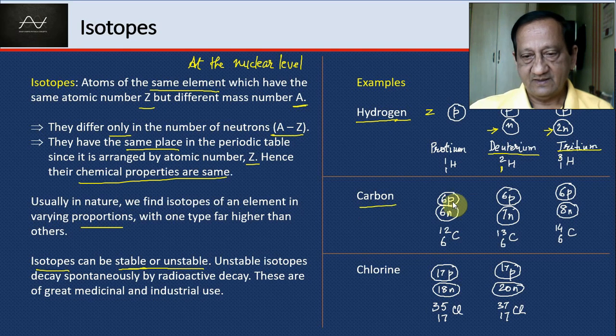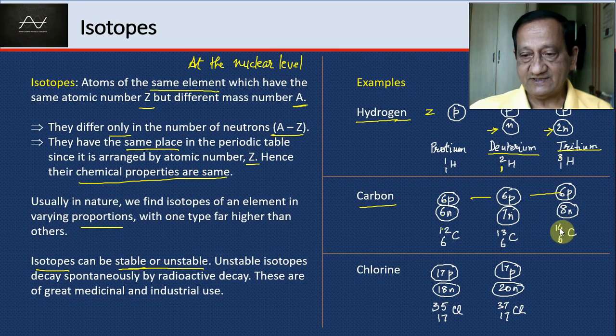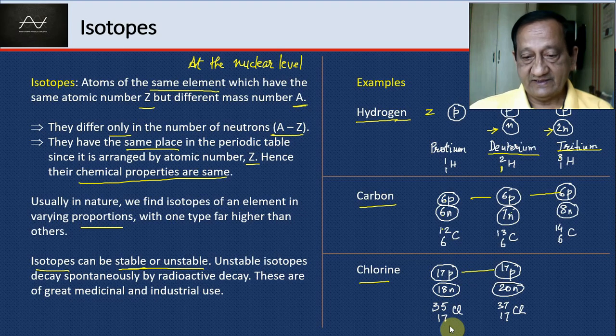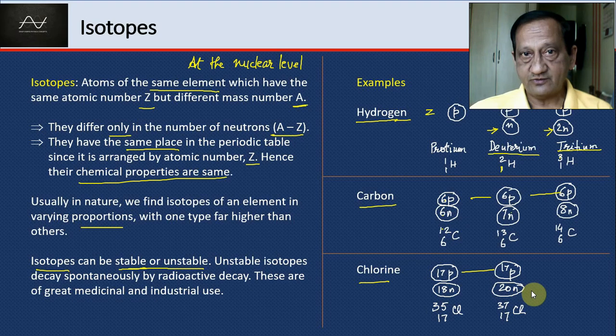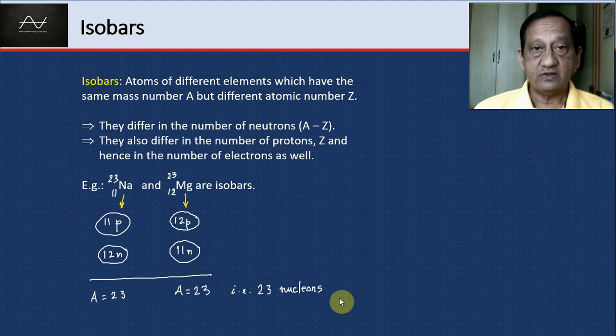Looking at carbon, the number of protons is 6, 6, 6, but neutrons are 6, 7, 8. So the A is 12, 13, and 14 respectively. For chlorine, protons are 17, 17, but in one isotope it's 18 neutrons and in the other 20 neutrons. So A is 35 and 37. Just some examples of isotopes.